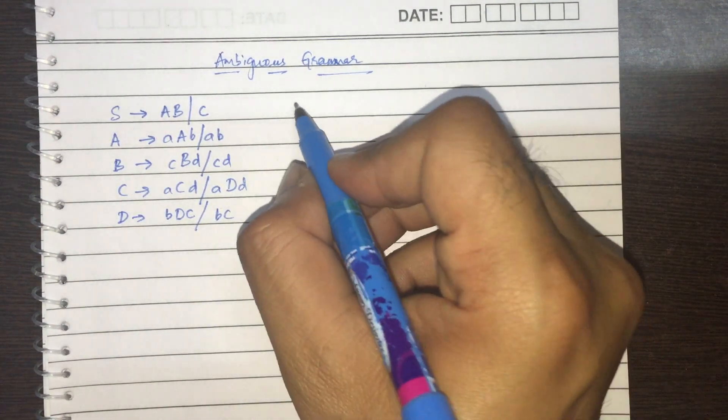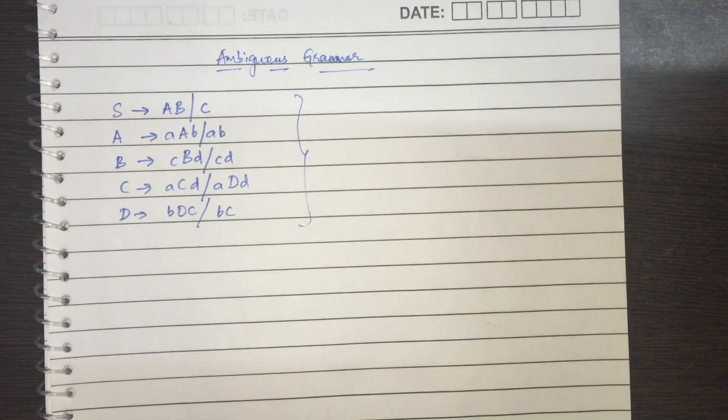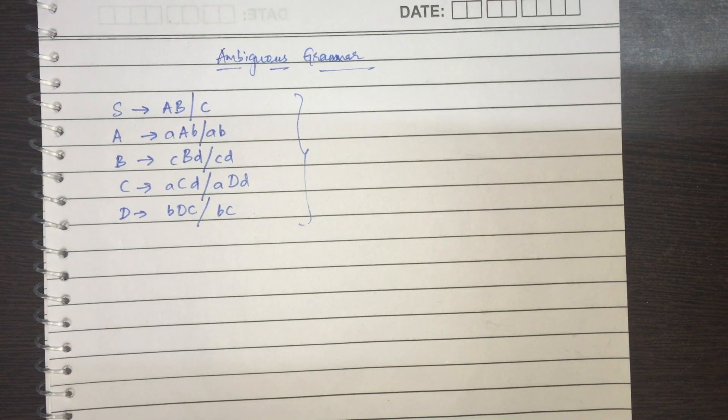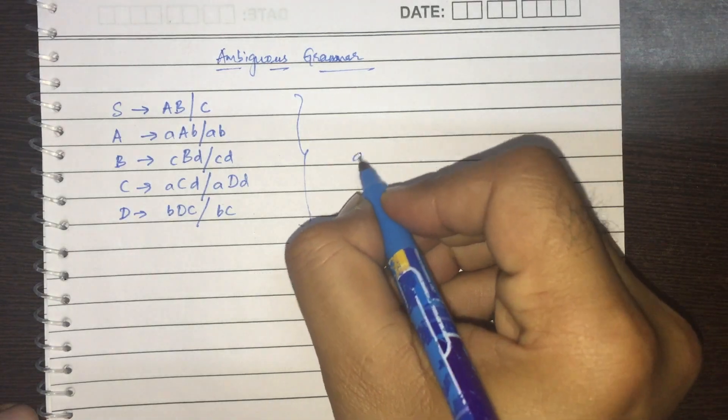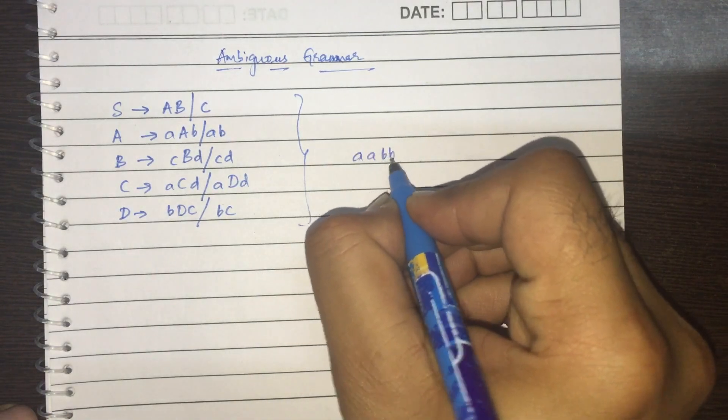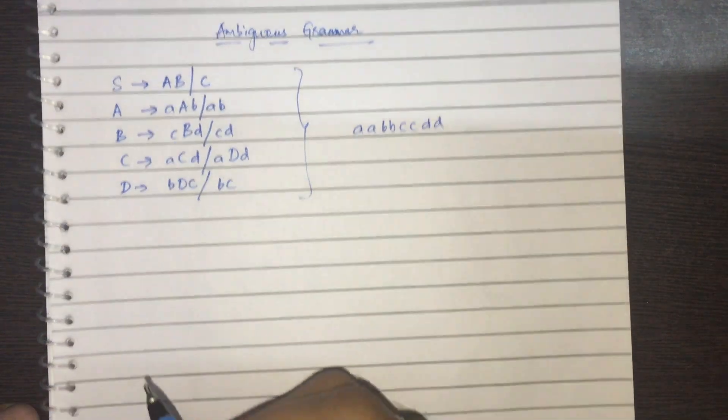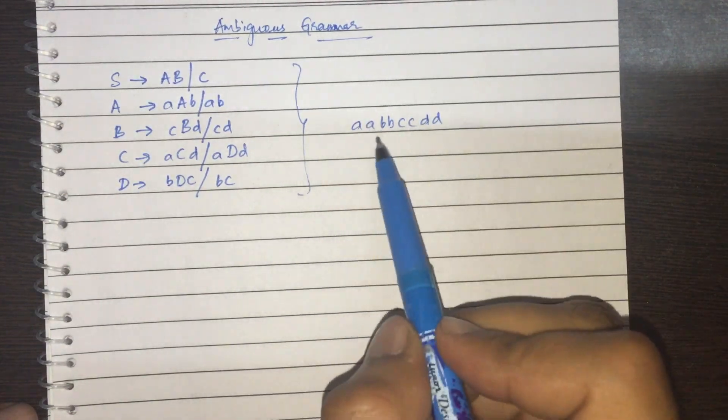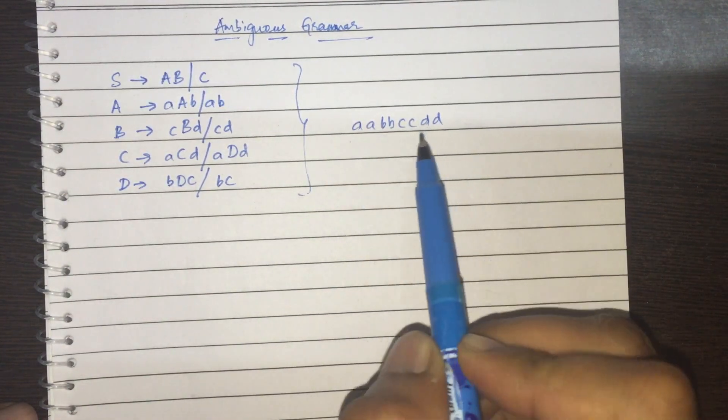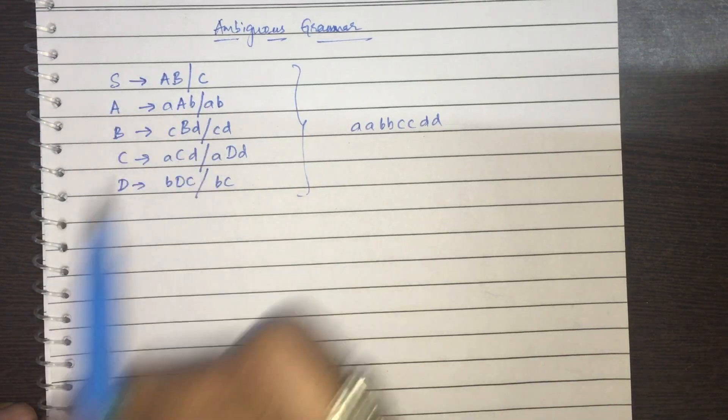So this is the grammar which I'm considering. And I will consider a resulting string, say A, A, B, B, C, C, D. Now let us see if we can get this resulting string in two or more different ways using this grammar.